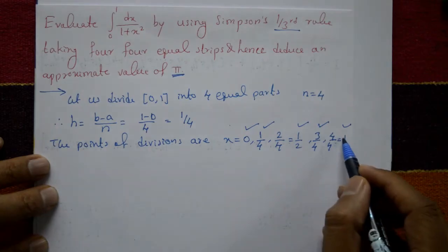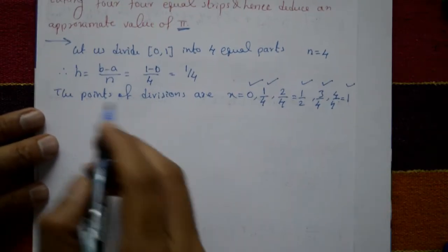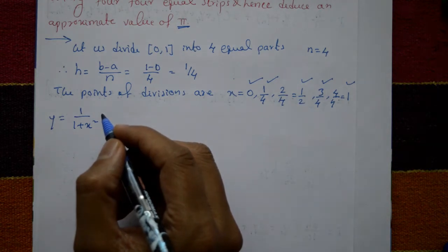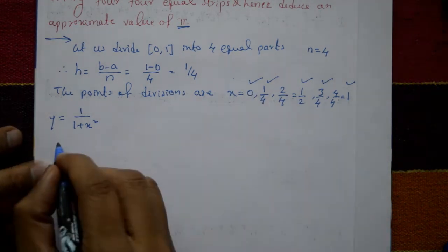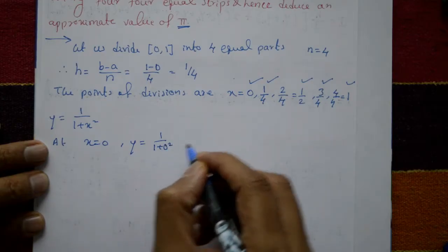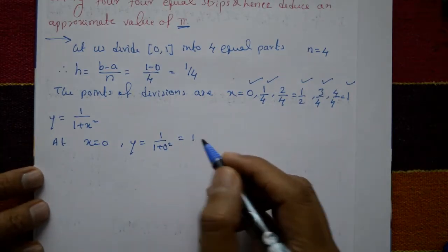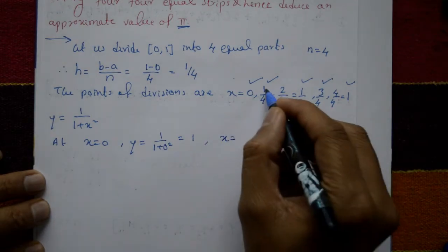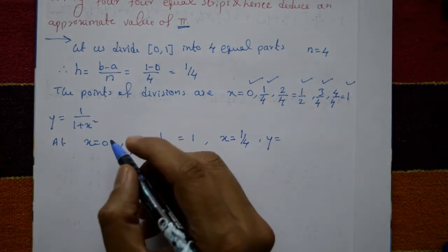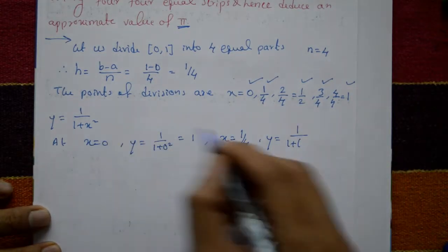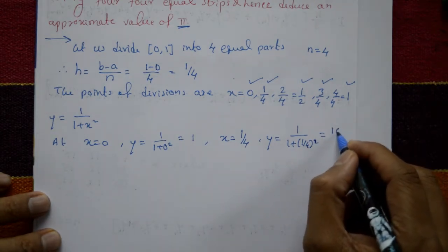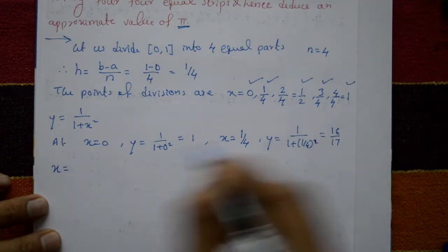We have 5 ordinates for 4 equal parts. The function is y = 1/(1+x²). At x = 0: y₀ = 1/(1+0) = 1. At x = 1/4: y₁ = 1/(1+(1/4)²) = 16/17.